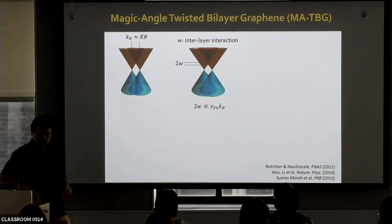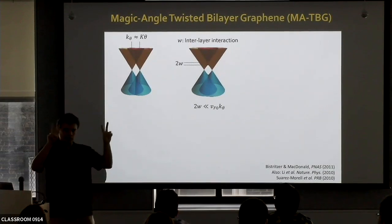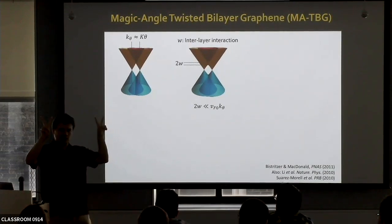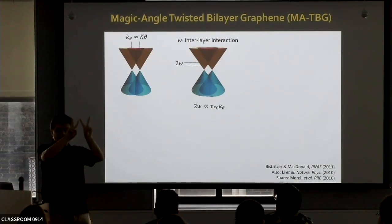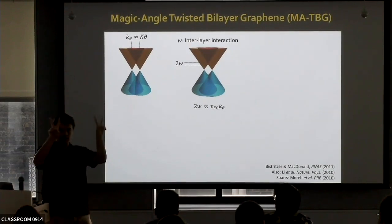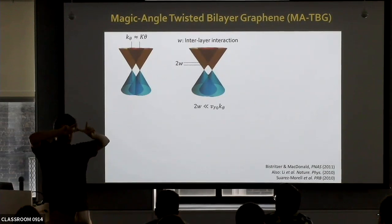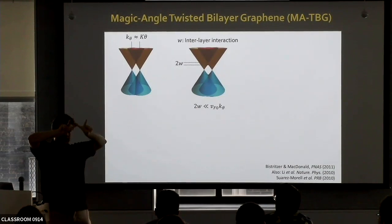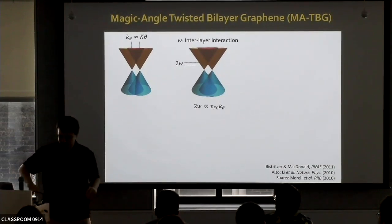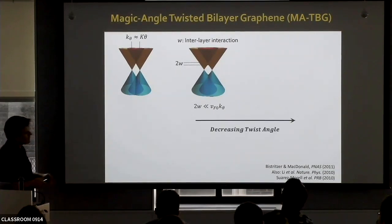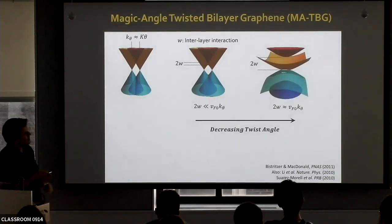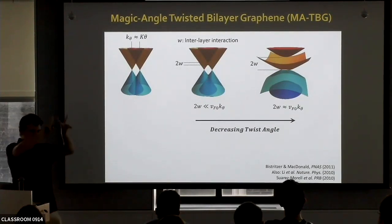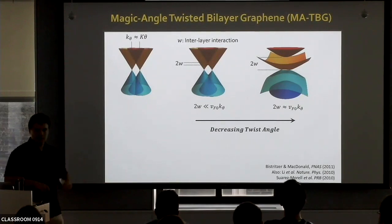As we rotate towards smaller and smaller angles, the Dirac cones come closer and closer to each other. You can see that this crossing point where there is band repulsion causes the bands to become flatter and flatter. So as we decrease the twist angle, there is an angle for which this band becomes flat. When 2W is of order the energy of the crossing point, the lower band becomes flat. This flat-band condition is reached at an angle coined by Bistritzer and MacDonald as the magic angle, about 1.1 degrees.